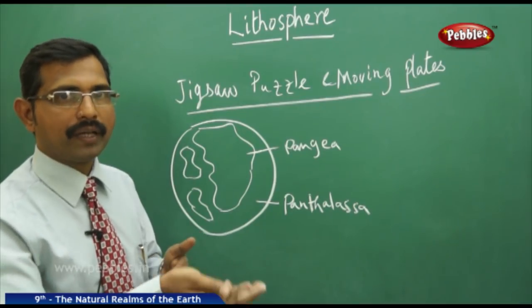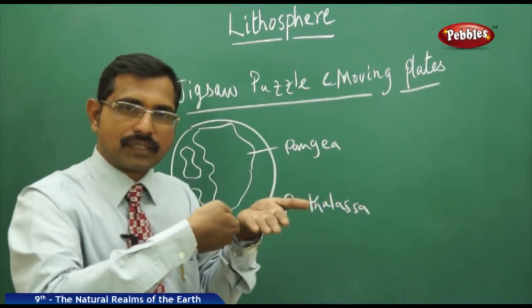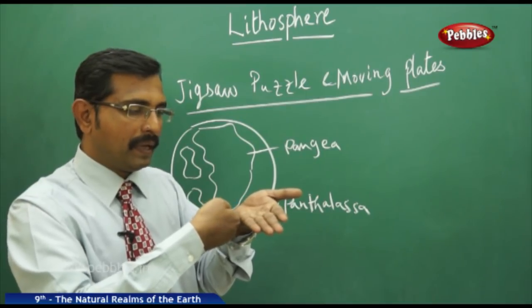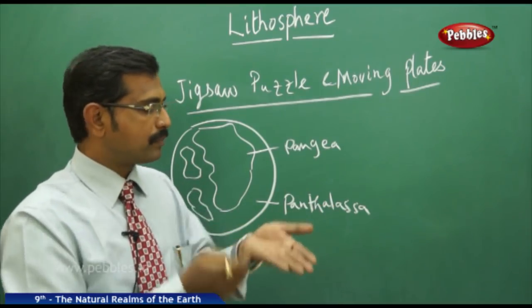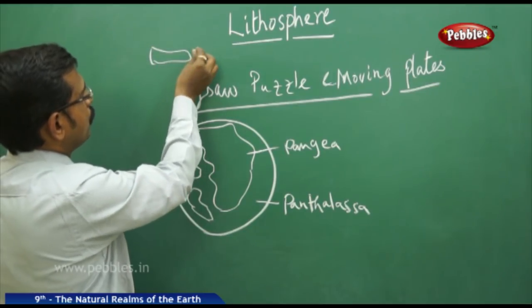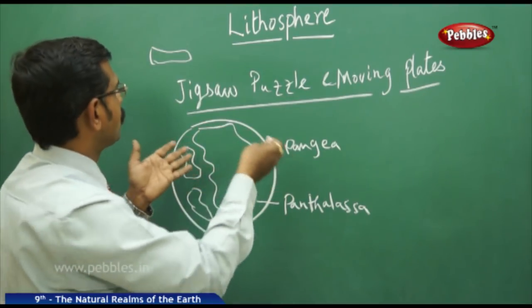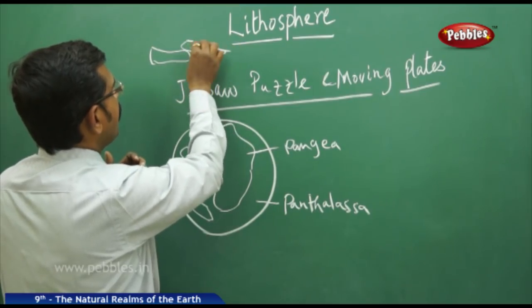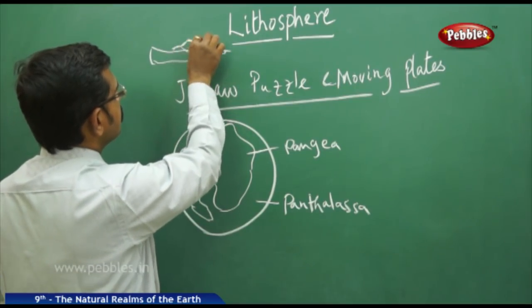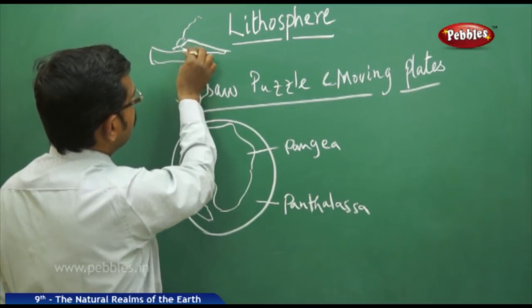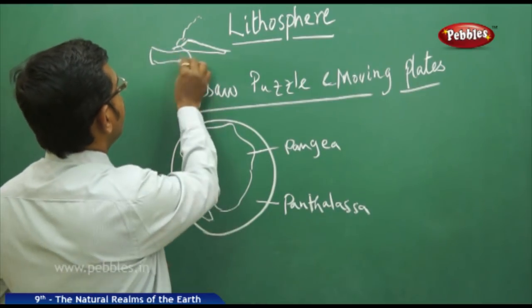Now these plates are moving and pushing each other. Where one plate meets another, it exerts energy, which we call an earthquake. Sometimes when these plates meet, one plate going on top will form a range of mountains, while the other plate touching and meeting here enters into the mantle part of the Earth.